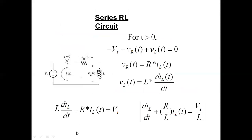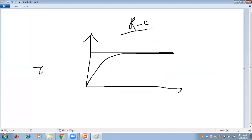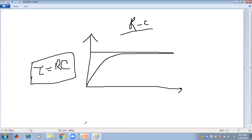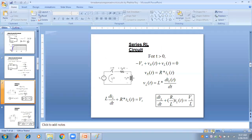For an RC circuit, the time constant τ = R·C. Now let us take an RL series circuit. Applying KVL: −Vs + Vr + Vl = 0, or Vs = R·iL + L·(diL/dt). Rearranging to the first order differential equation: (diL/dt) + (R/L)·iL = Vs/L.